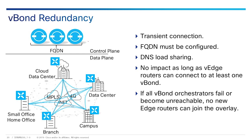Every time a vEdge boots, it connects to vBond. This is why an IP address or hostname of vBond must be configured on each vEdge, or provided through plug-and-play or zero-touch provisioning. vBond provides the vEdge with all further information it needs to operate, such as which other controllers to connect to. If more than one vBond is required, the vEdge routers must be configured with a fully qualified domain name — not an IP address — and DNS load balancing must be configured to distribute load to all available vBond servers. This DNS load sharing is configured externally — you point to an FQDN and DNS routes you to a vBond, usually in a round-robin fashion, though you can set priorities depending on your DNS load balancer.